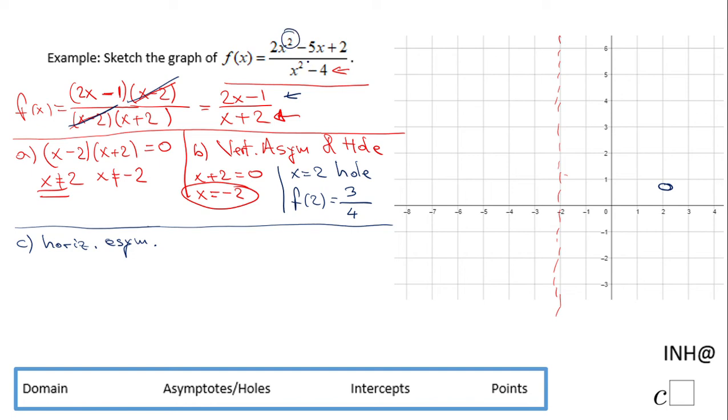The degree of the numerator is 2, the denominator is 2, the same degree. So we have a horizontal asymptote which is the quotient of the leading coefficients, 2 over 1, which is 2.